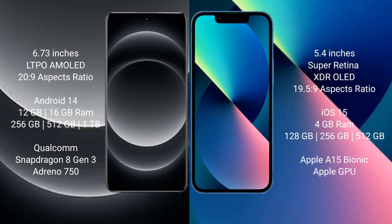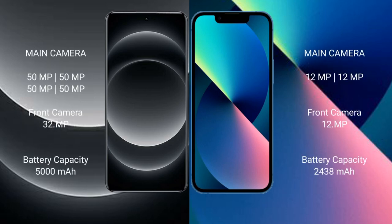The Xiaomi 14 Ultra comes with a rear quad camera setup and a 32 megapixel front camera. The iPhone 13 Mini comes with a rear dual camera setup and a 12 megapixel front camera.